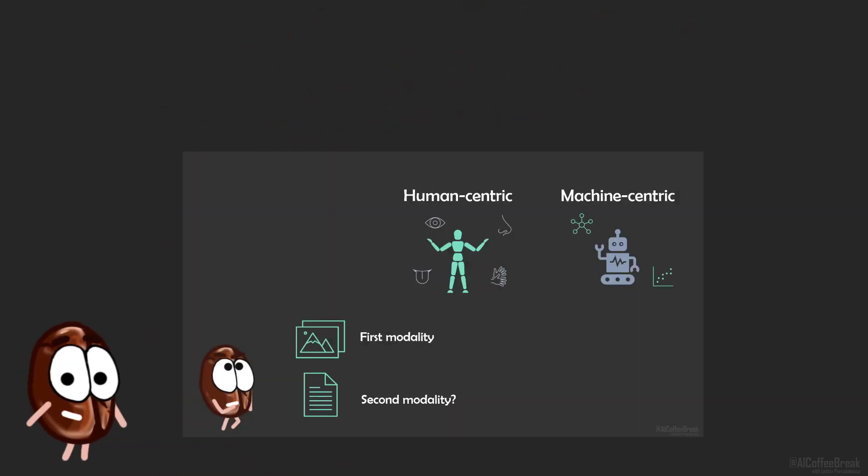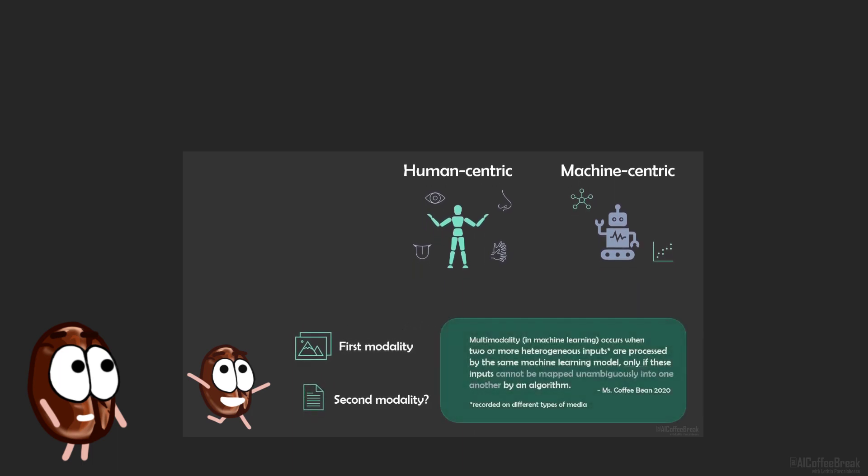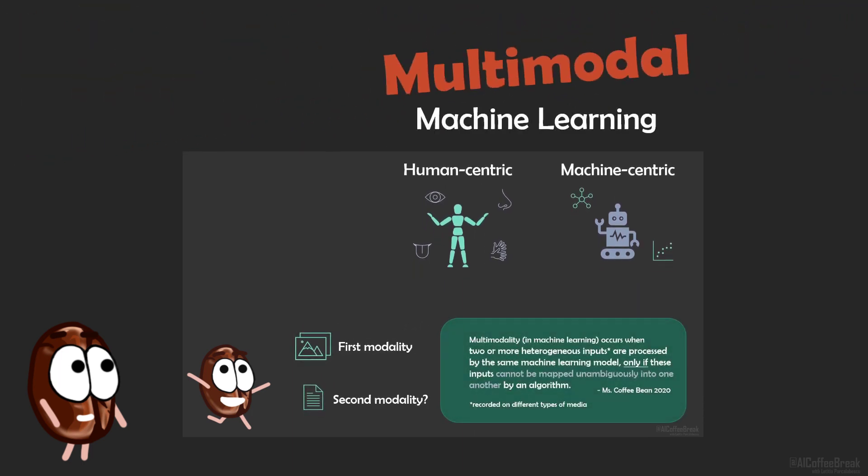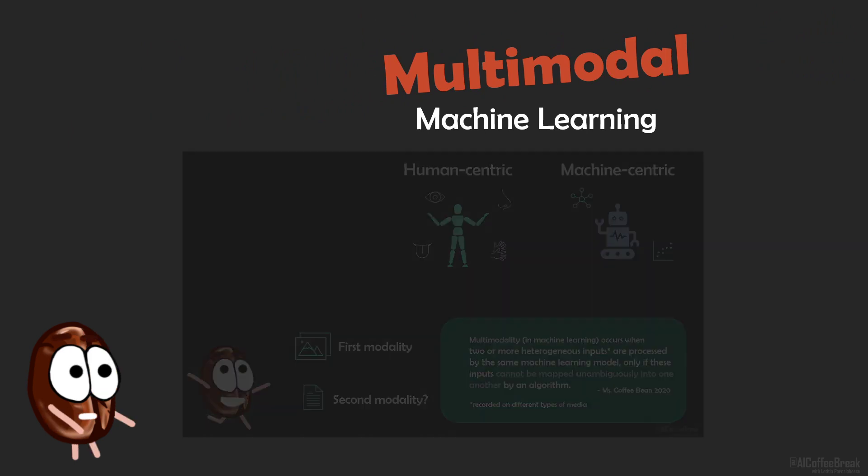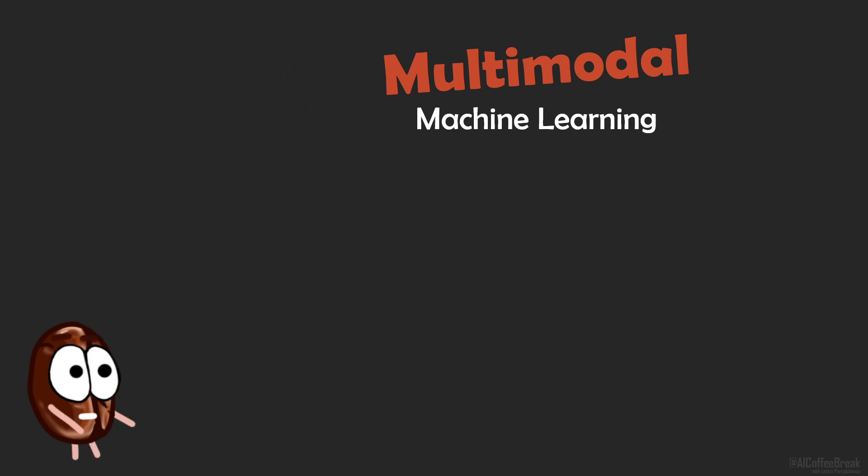Hello! In the last video, Ms. Coffee Bean presented a couple of definitions of multimodal machine learning and even came up with a definition of her own. There we learned how images are one modality and language is another modality. So we will spend this and the next video to talk about how neural networks have problems combining vision and language.